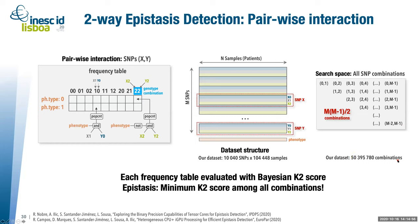So what does finding epistasis mean computationally? When we pick two SNPs, the first thing is to construct a frequency table. We pick two genotype vectors and create a frequency table for each genotype combination. For example, picking vector x1 from the first SNP and y0 from the second gives genotype combination (1,0).